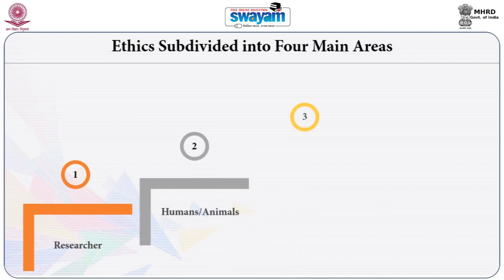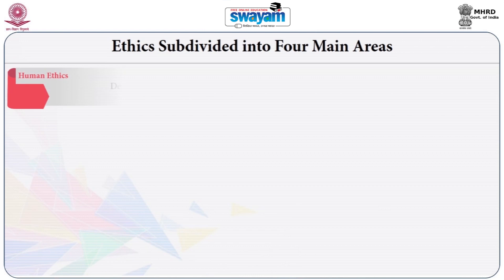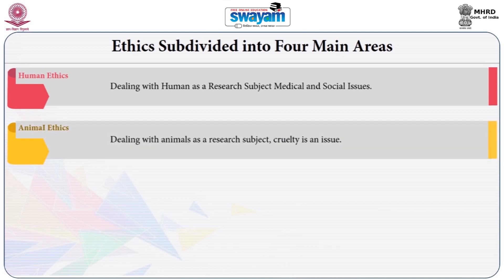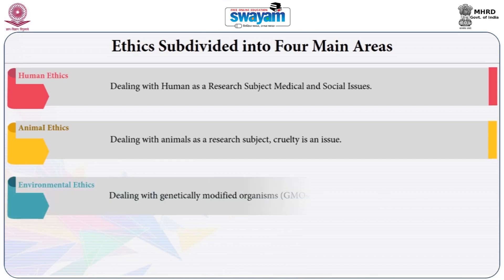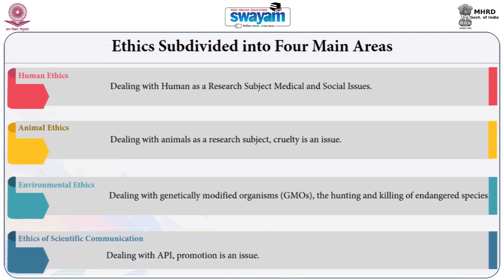Research ethics can be subdivided into four main areas: Human ethics, dealing with humans as research subjects for medical and social issues. Animal ethics, dealing with animals as research subjects in which cruelty is an issue. Environmental ethics, dealing with genetically modified organisms (GMOs) and the hunting and killing of endangered species. Ethics of scientific communication, dealing with publication integrity in which promotion is an issue.